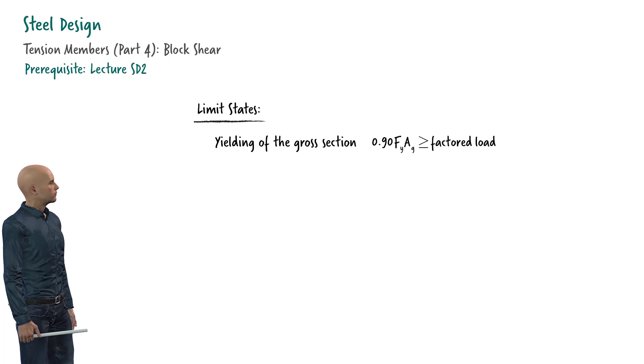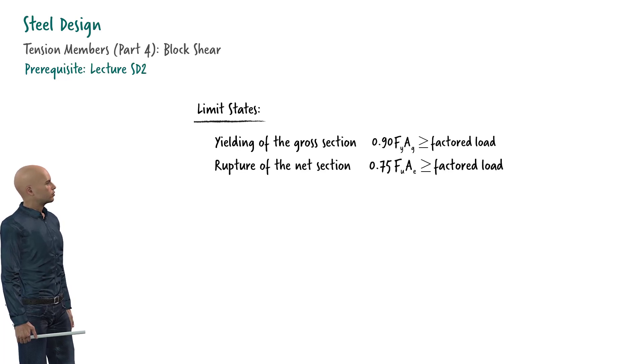In addition to yielding of the gross section and rupture of the net section limit states, we need to consider another limit state when designing tension members. It is called block shear.